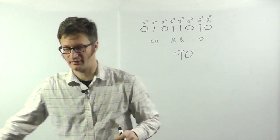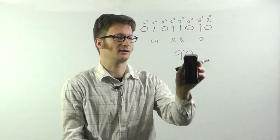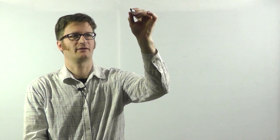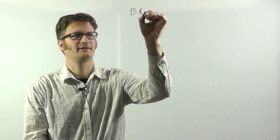So that's the most simple way that you can encode binary data. Now, let's look at binary coded decimal, which is often abbreviated as BCD.